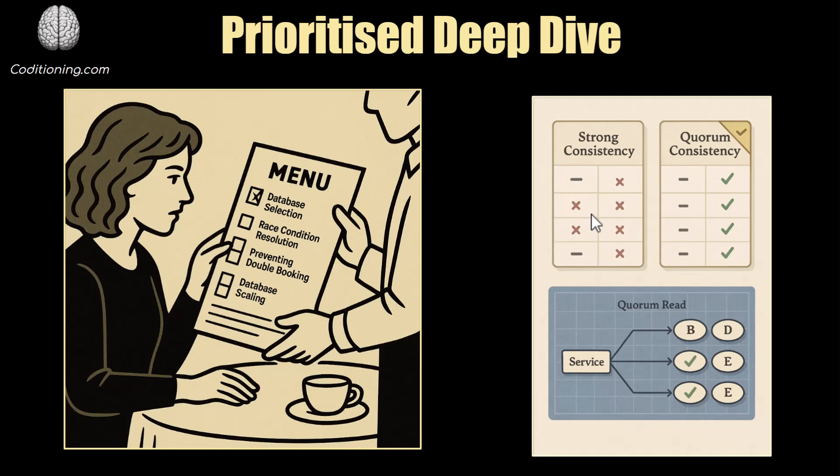The idea is: you present whatever the problem is, present the solutions you're considering, what are the pros and cons of each solution, and if you pick a certain solution, what are the trade-offs you're making. Then you're justifying your decision — why this is the preferred option. That's a deep dive. Then you move on to the next problem if you have time and do rinse and repeat. By the time you're done with this deep dive, the interviewer should have a good idea of whether you've passed or not.